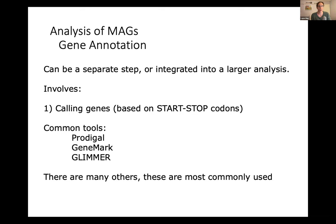Gene annotation can be a separate step where you call genes — looking for starts, stops, and open reading frames — and then annotate to a known database to figure out what each gene is, what it's most closely related to, and how closely related it is. Common tools include Prokka and RAST, often wrapped into a larger pipeline. The program we're using has Prodigal under the hood for gene calling. The most frequently used gene callers are Prodigal, GeneMark, and Glimmer.